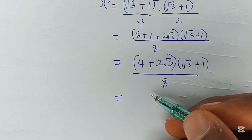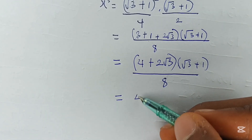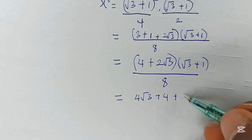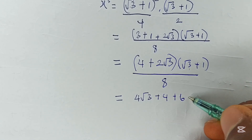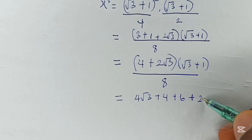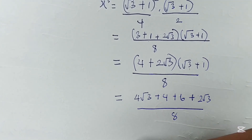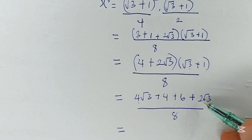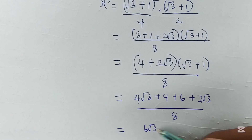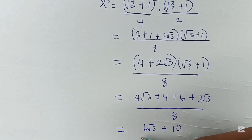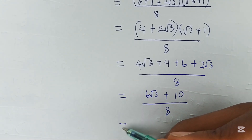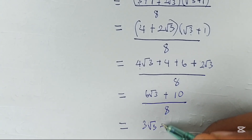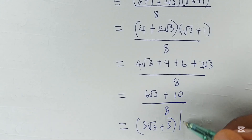Expanding (4 + 2√3)(√3 + 1): 4 × √3 = 4√3, plus 4 × 1 = 4, plus 2√3 × √3 = 6, plus 2√3 × 1 = 2√3, all over 8. Combining like terms: 4√3 + 2√3 = 6√3, and 4 + 6 = 10. So we get (6√3 + 10)/8, which simplifies to (3√3 + 5)/4.